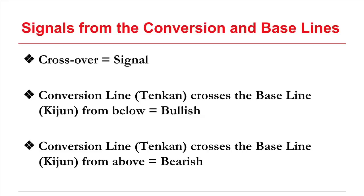Beyond the signals from the cloud, the main signals in Ichimoku come from crossovers of the conversion and baselines. When the conversion line or Tenkan crosses the baseline or Kijun from below, it's a bullish signal — that's when the bright blue line crosses the dark green line from below. However, when the conversion line crosses the baseline from above, it is a bearish signal.